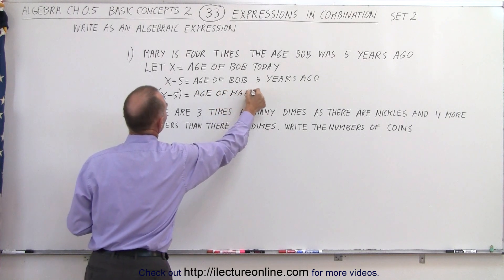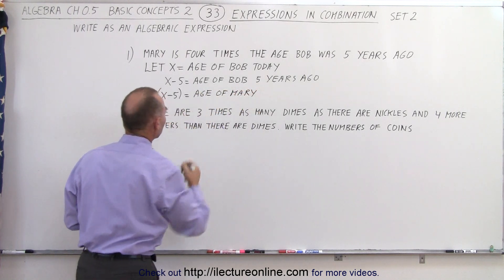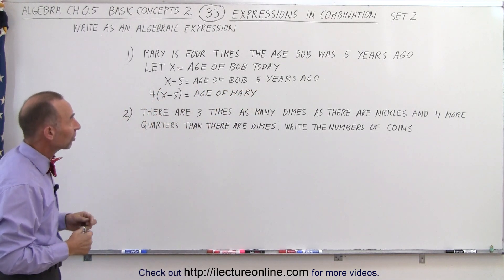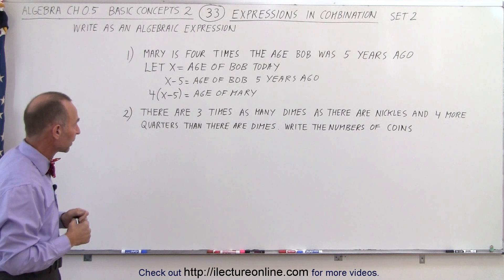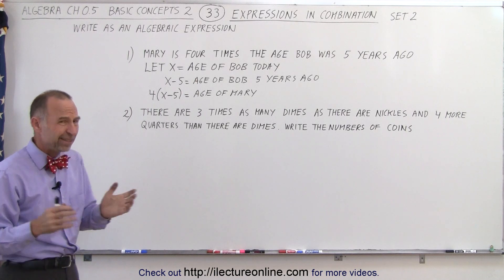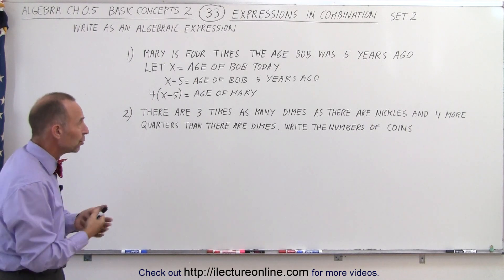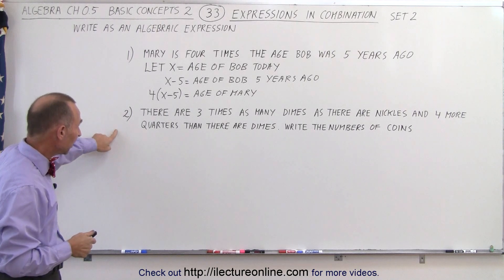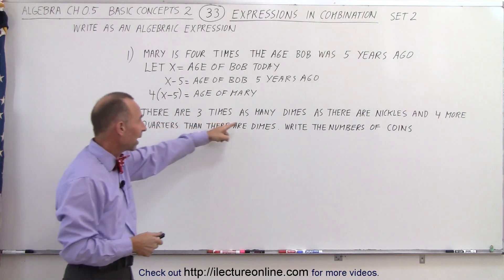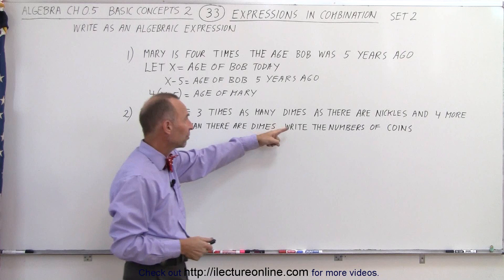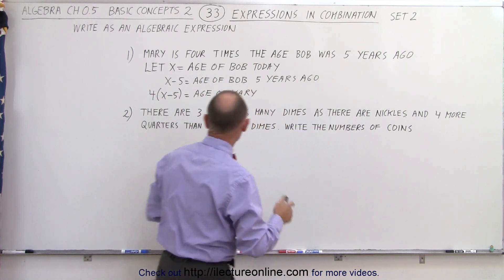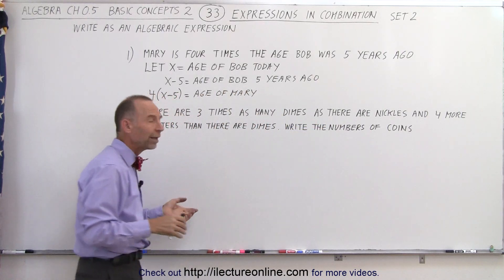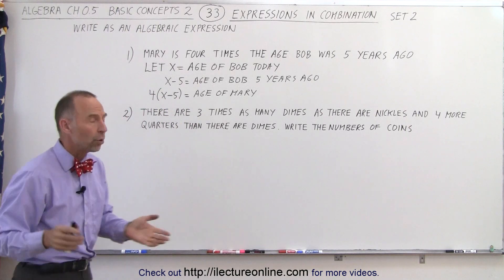And that is how we find algebraic expressions that are appropriate to the sentences we see in algebra. We see this kind of thing more often when we do word problems in algebra. The next one states: there are three times as many dimes as there are nickels, and four more quarters than there are dimes — write the number of coins.